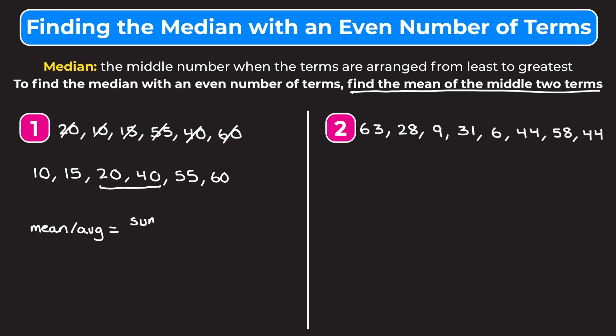To find the mean or the average, we're going to take the sum of the numbers and divide it by the number of terms. We need to find the sum of 20 and 40, so we're going to add 20 and 40, and we're finding the average between two numbers so we're going to divide that by 2. 20 plus 40 is 60, so we have 60 over 2, which is just 60 divided by 2, which is 30. So the median of our data set is 30.